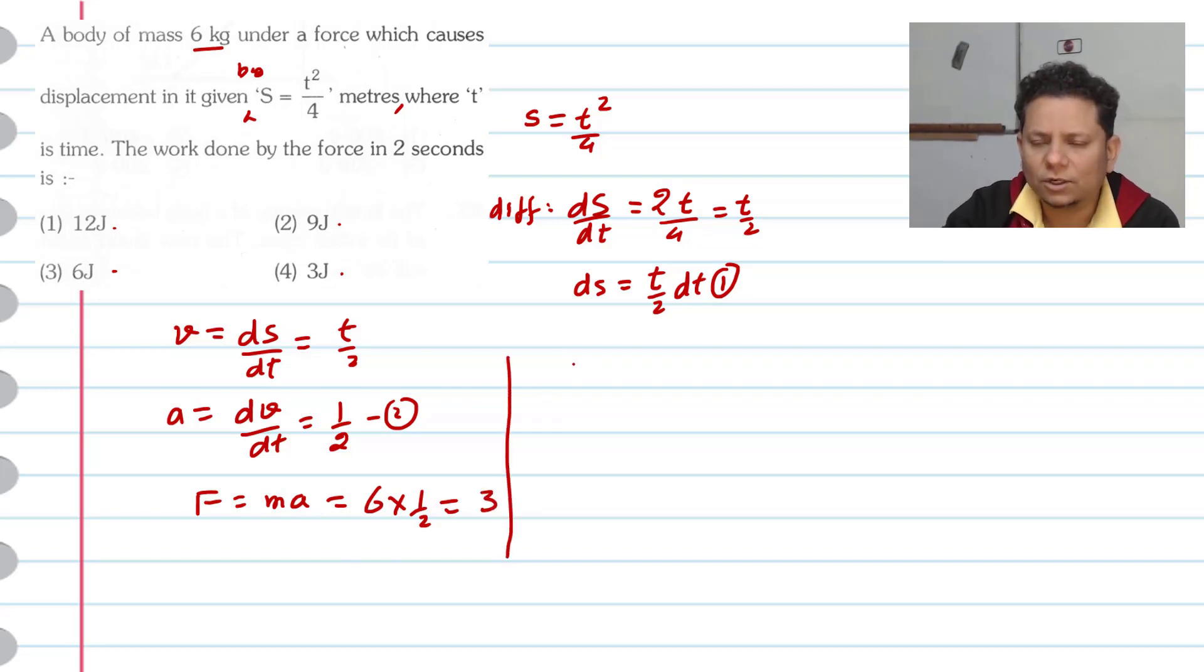Now you know these things. The work done, we write as: work done equals integration of F ds. The value of F we write from here, this will be equal to 3. Integration 3 times ds. The value of ds comes from this equation, t/2 dt, and time goes from 0 to 2.